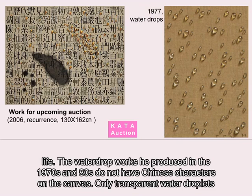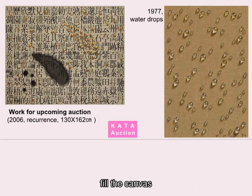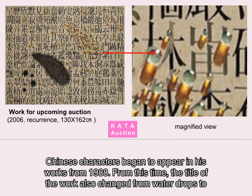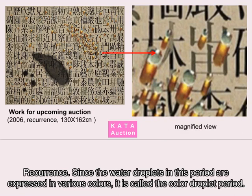The water drop works he produced in the 1970s and 80s do not have Chinese characters on the canvas. Chinese characters began to appear in his works from 1988. From this time, the title of the work also changed from water drops to recurrence.